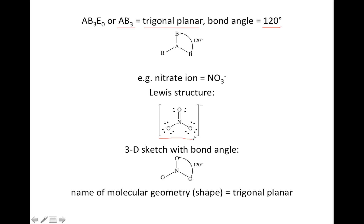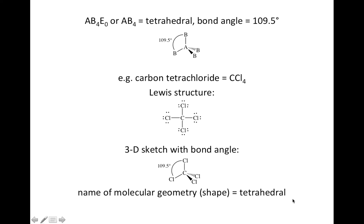The example we're going to do is nitrate, NO3⁻. Here's the Lewis structure — you can see there are three atoms bonded to the center, and the nitrogen has no lone pairs. The best way to keep them apart is 120 degrees. I redraw the diagram with nitrogen and oxygen atoms rather than A's and B's. Even though there was a double bond in the Lewis structure, you don't show that in your sketch. The shape is called trigonal planar — all the atoms are in the same plane, and the outer atoms are in the shape of a triangle.